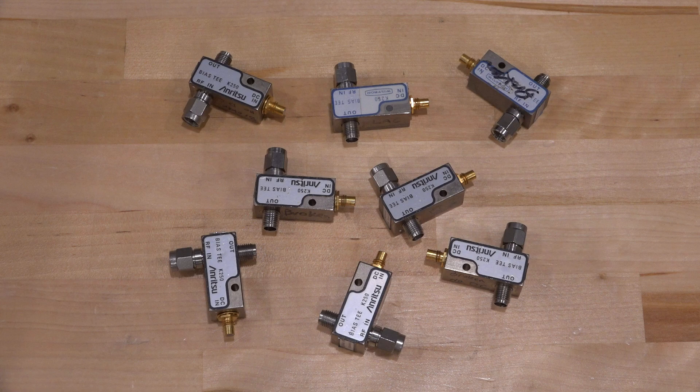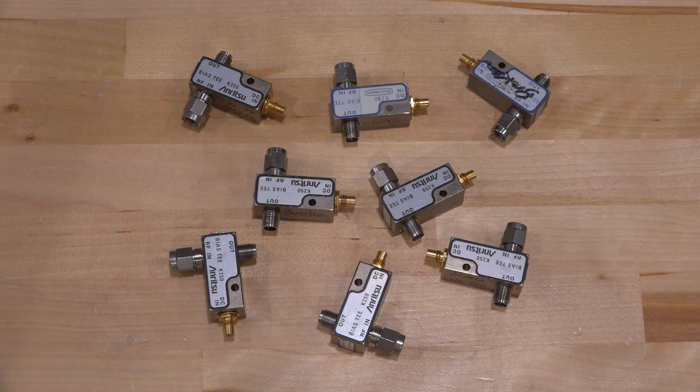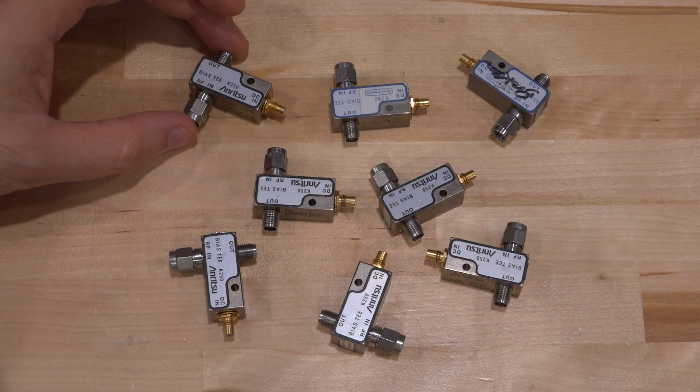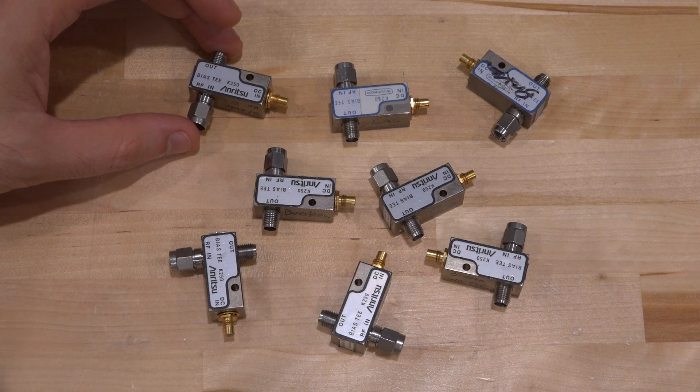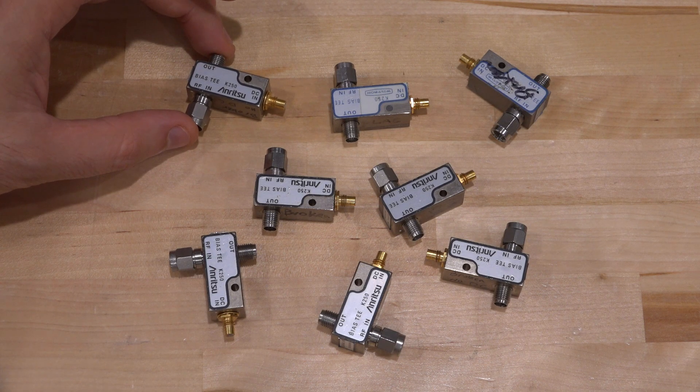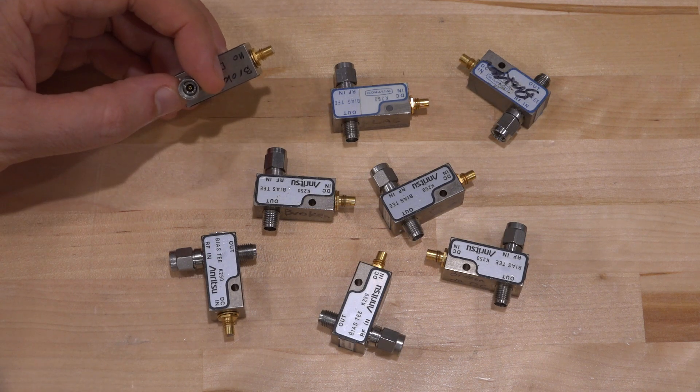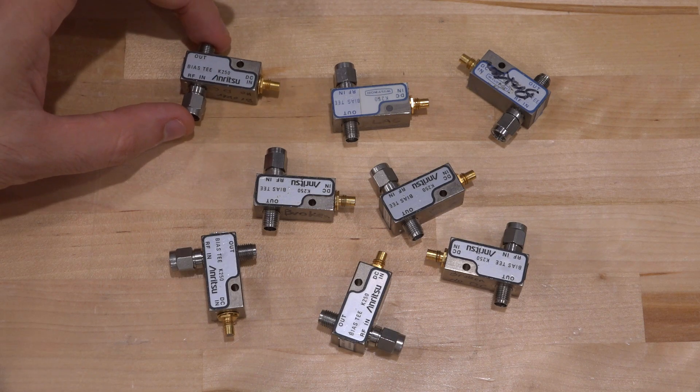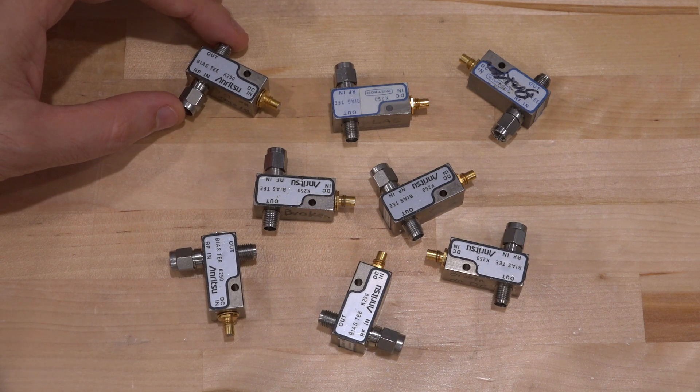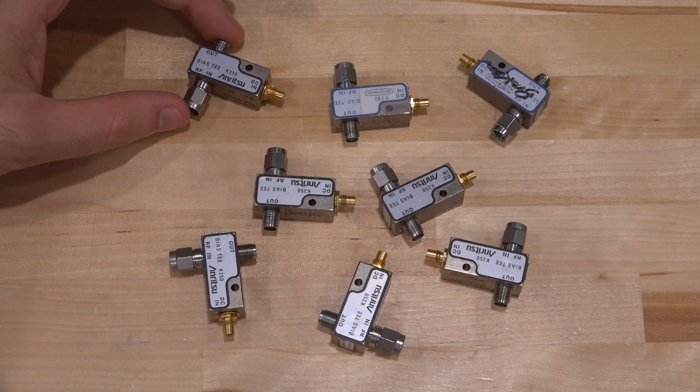Hi, welcome to the noise path. In this episode, we're going to take a look at something a viewer sent in. These are a whole bunch of Anritsu K250 bias tees. These are rated from 100 MHz to 40 GHz. They have a K connector, of course, and they're rated about half an amp, and they have an insertion loss of about 1.2 dB. So they're pretty good bias tees.